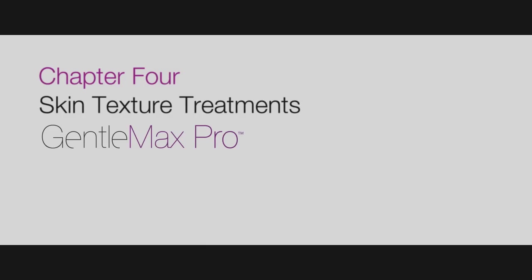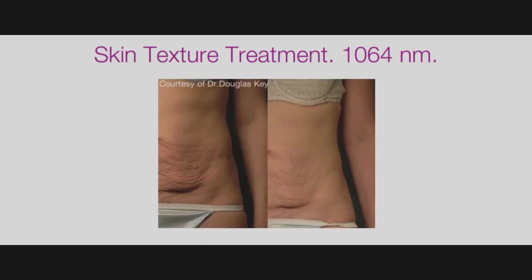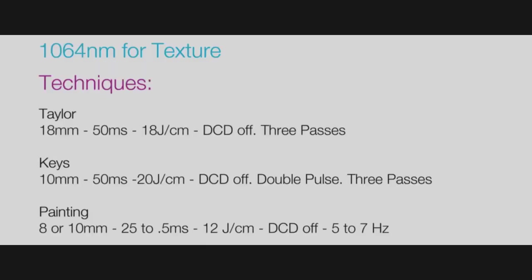Chapter 4: Skin Texture Treatments. Skin texture treatments with the 1064 nanometer wavelength allow for deep heating of the dermis, resulting in collagen formation and subsequently improved tone and texture.